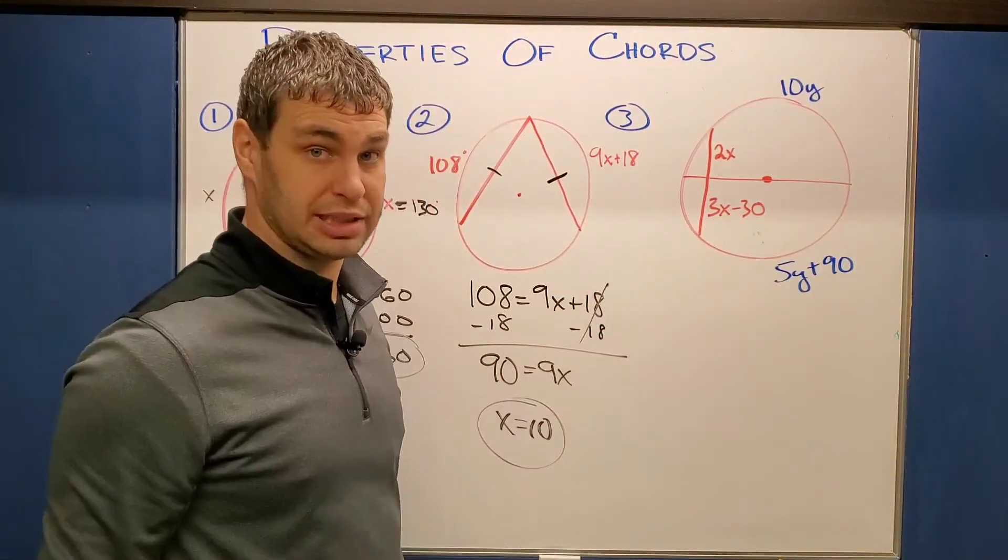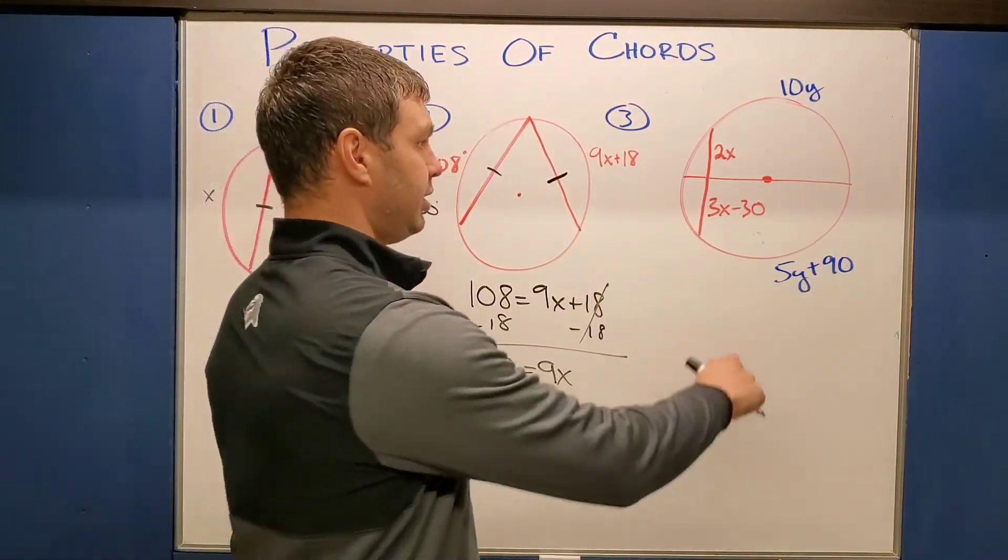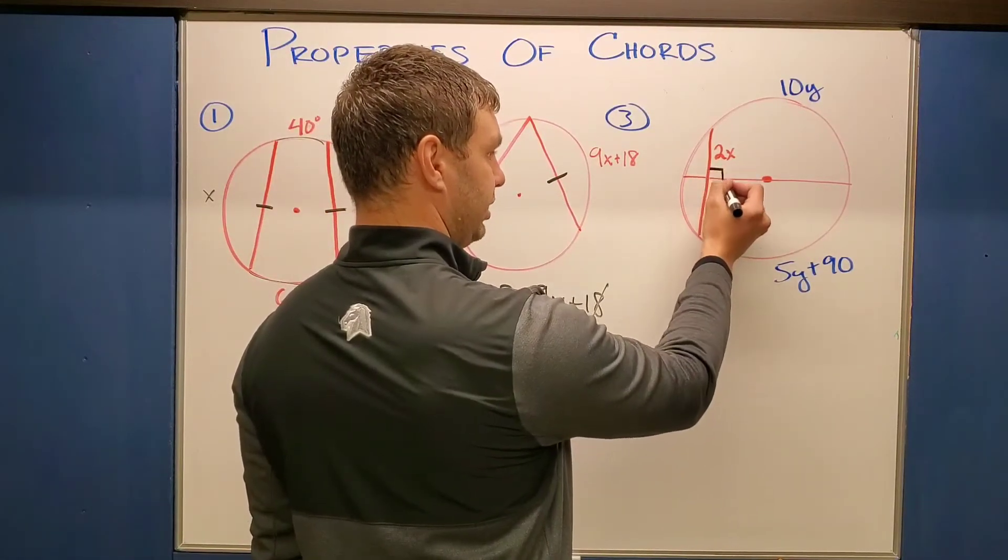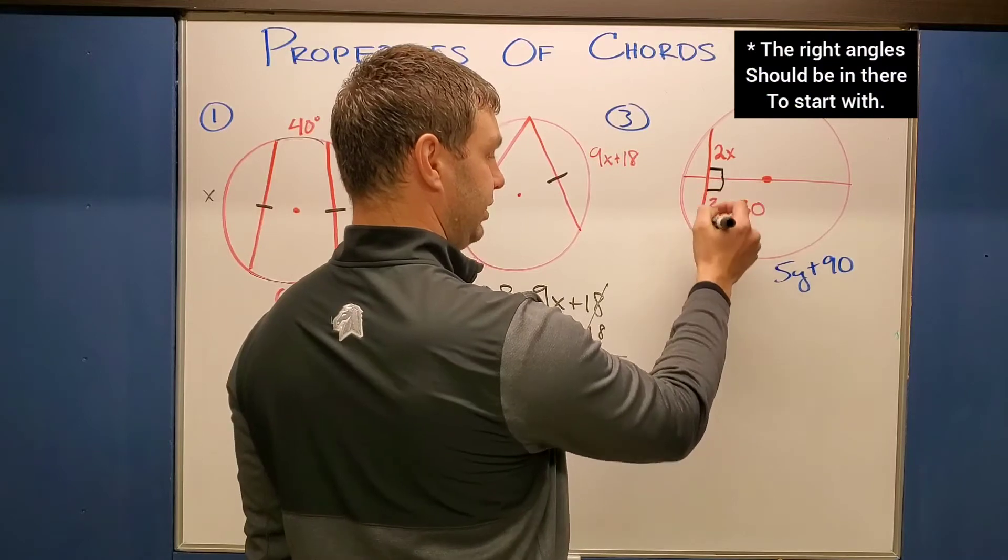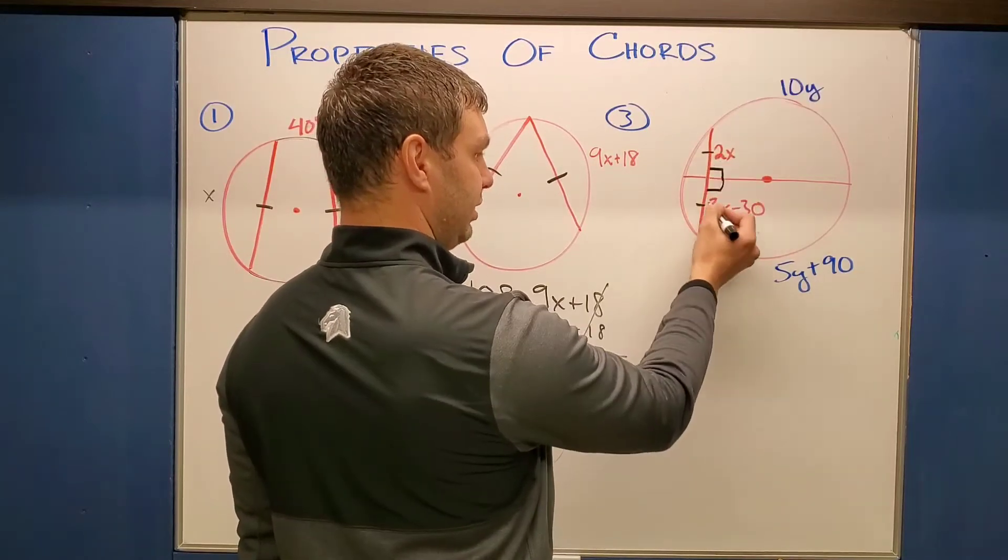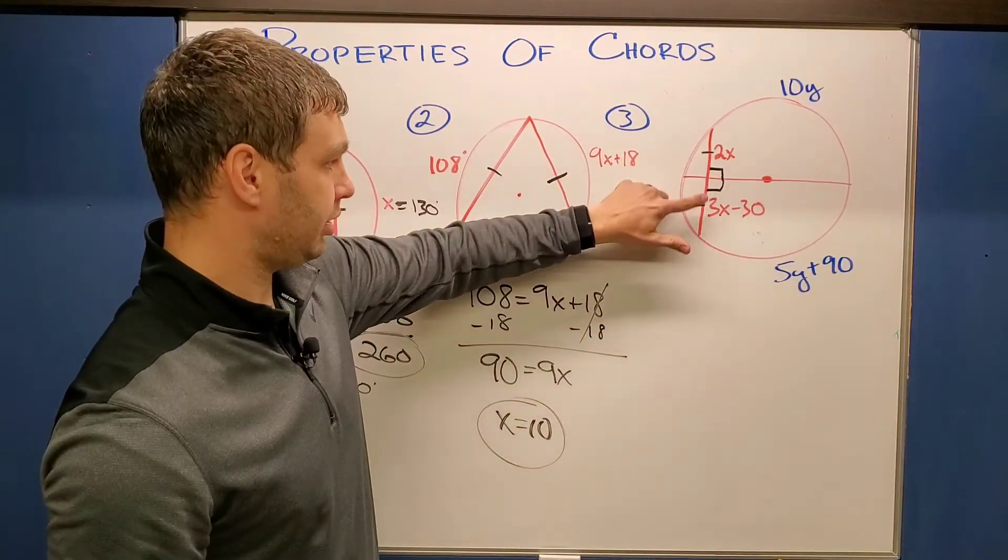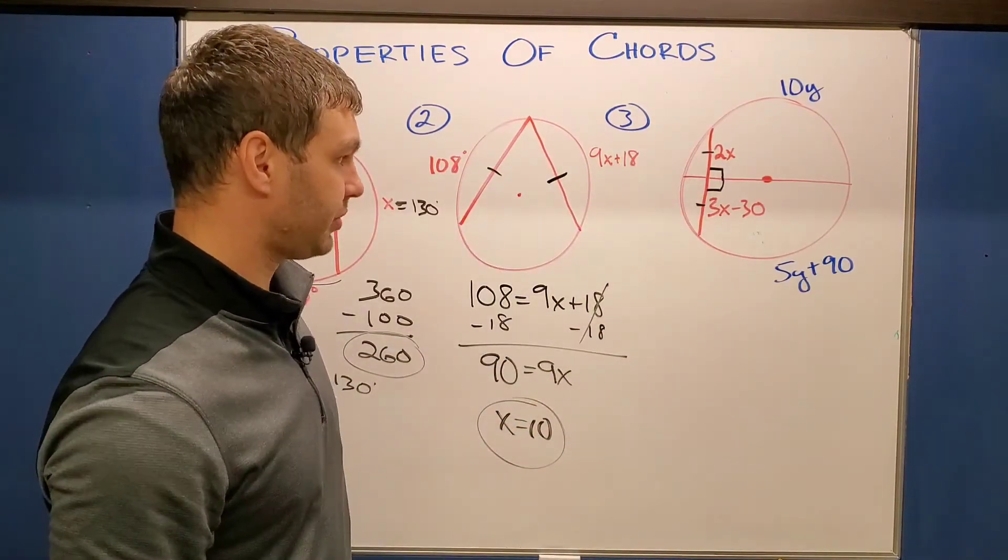And so because this is a diameter, we have that chord property that says this has to be right angles and also this and this are going to be congruent. It bisects that chord perpendicularly.